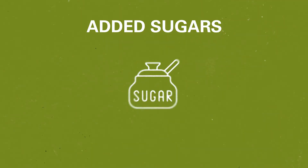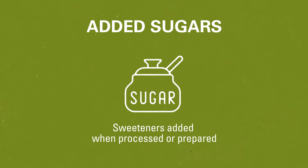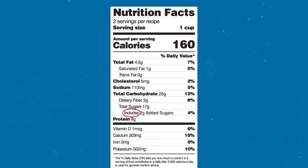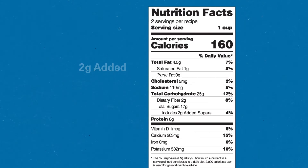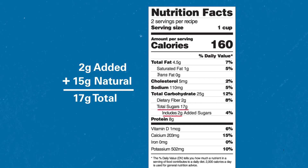Added sugars are sugars or other sweeteners that are added to foods and drinks when they are processed or prepared. Having the word 'includes' before added sugars on the label indicates that added sugars are included in the number of grams of total sugars in the product. For example, this product has 2 grams of added sugars and 15 grams of naturally occurring sugars, equaling 17 grams of total sugars.